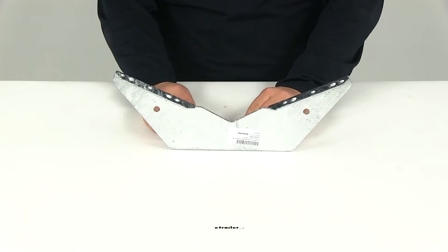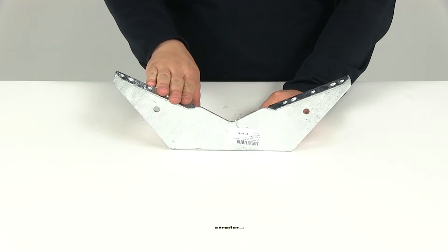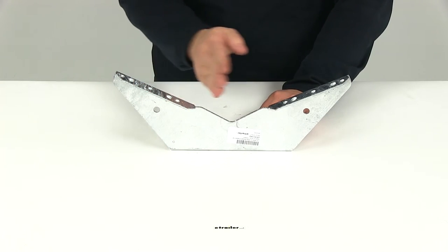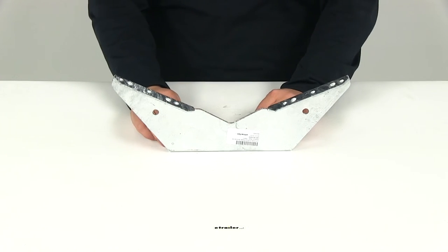This bracket holds two two-by-sixes or two-by-eights. Those are your bunk board sizes and they angle towards each other. That provides support for one of the boat's pontoons.